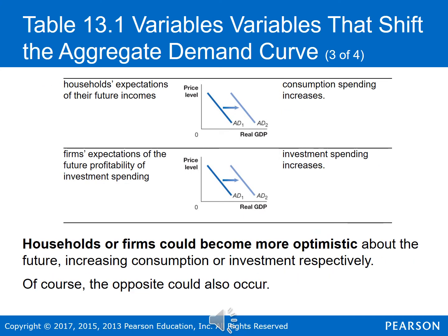The next variable is changes in expectations of households and firms. If households become more optimistic about their future incomes, they're likely to increase their current consumption and spending on new houses, thereby increasing investment spending — this shifts the aggregate demand curve to the right. If households become more pessimistic about their future incomes, the aggregate demand curve will shift to the left. We'll see pretty much the same thing with firms: if firms become more optimistic about the future profitability of investment spending, the aggregate demand curve shifts to the right, and if firms become more pessimistic, it shifts to the left.